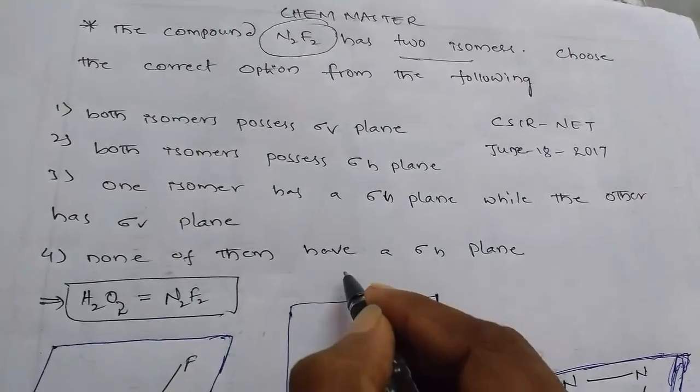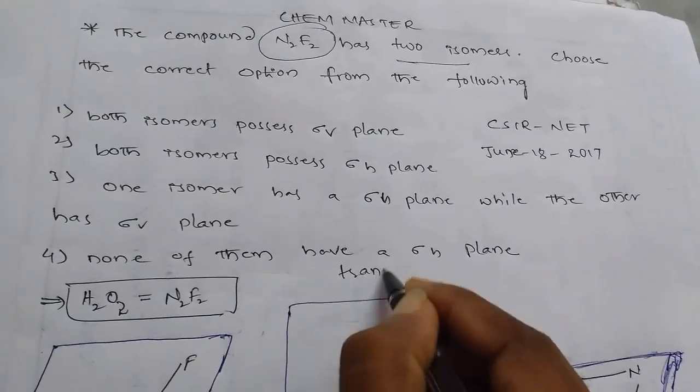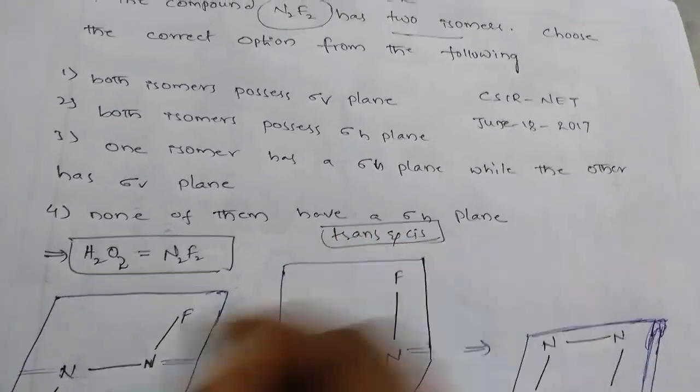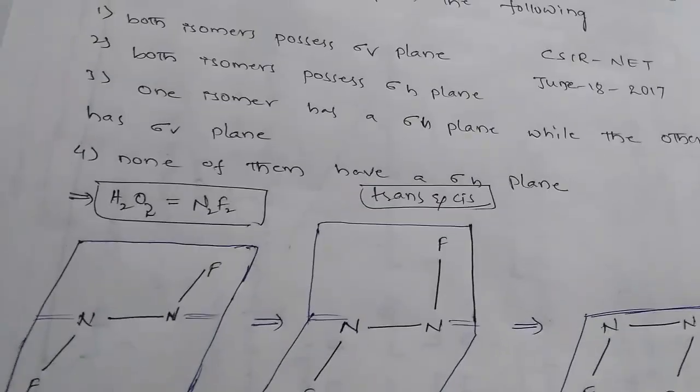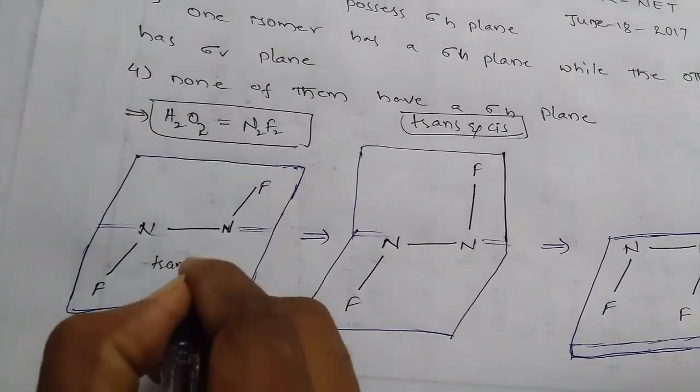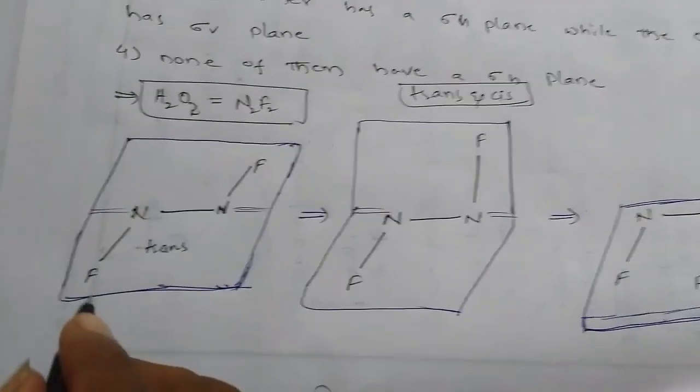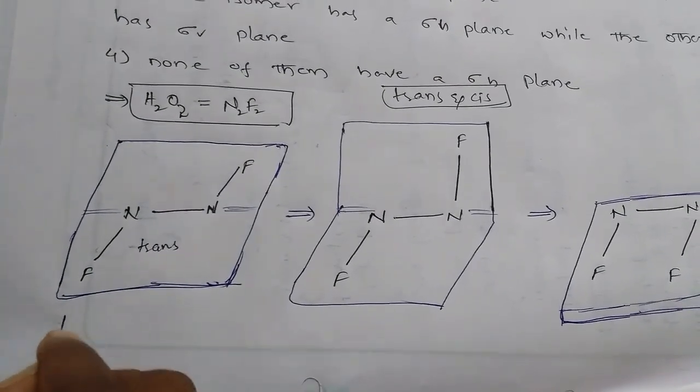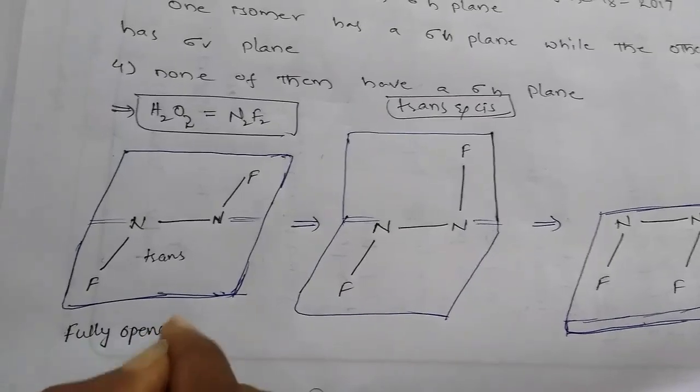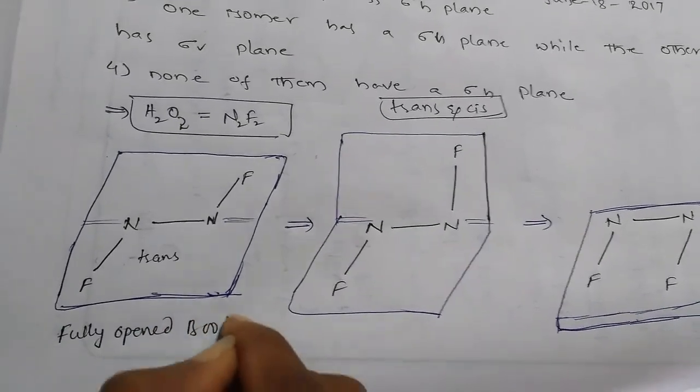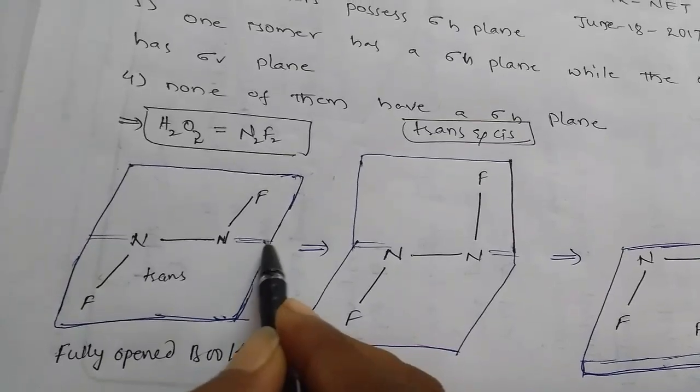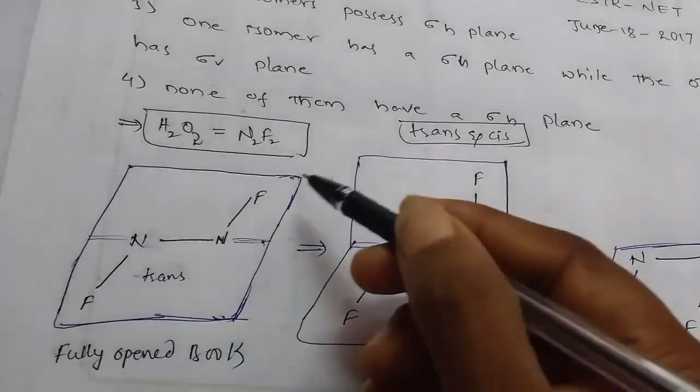So that is, one is trans and one is cis. If you observe, this is the trans form. So this is fully opened book-like structure.